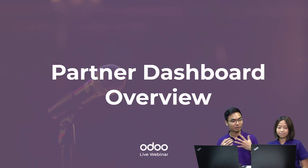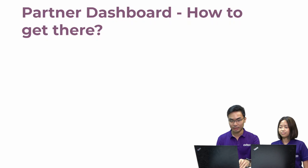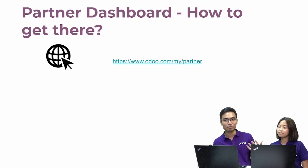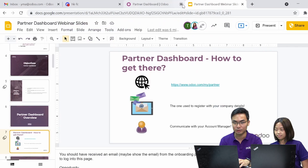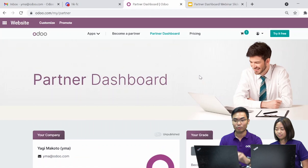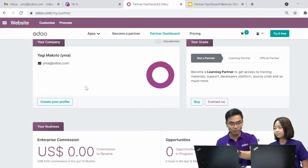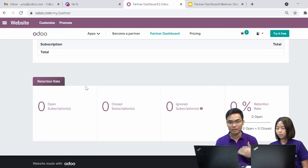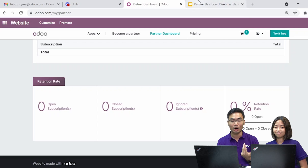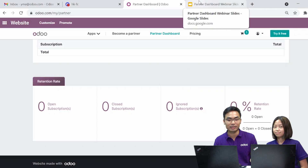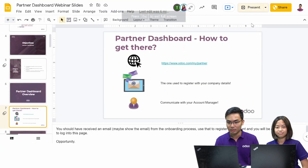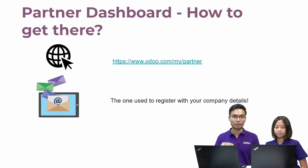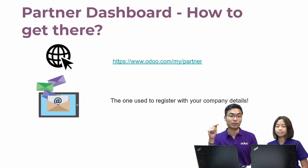I'd like to show the beautifully designed UI of the partner dashboard. You might be wondering how to get there. Here's the link, or you can simply Google 'Odoo partner dashboard' which will lead you to the same page. Once you're in, you'll be able to see different sections — your company grade and all the different things, which are very intuitively designed by Odoo. Keep in mind that the email you used to register with your company details after getting onboarded as a partner is the one you should use to log in.